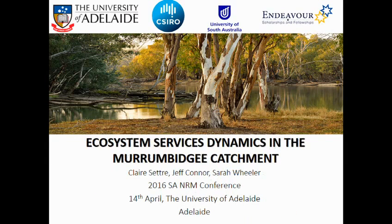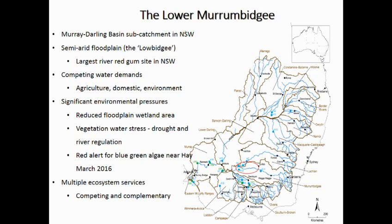Morning everyone. We're going to take a step away from the lower lakes into New South Wales and into a wider discussion about ecosystem services more generally. This comes out of some PhD work I've been doing around ecosystem service dynamics in response to hydrological regimes. Our study catchment is the Lower Murrumbidgee, a Murray-Darling Basin sub-catchment in New South Wales. We're particularly interested in the lower part of the Murrumbidgee just before the confluence with the Murray River — also known as the Low Bidgee — a semi-arid floodplain and home to the largest river red gum site in New South Wales.